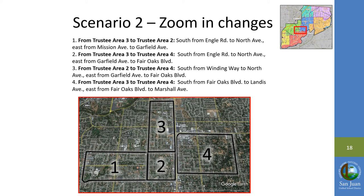The first change includes the area going south from Engel Road to North Avenue and east from Mission Avenue to Garfield Avenue. The second change includes the area going south from Engel Road to North Avenue and east from Garfield Avenue to Fair Oaks Boulevard. The third change includes the area going south from Winding Way to North Avenue and east from Garfield Avenue to Fair Oaks Boulevard. The fourth change includes the area going south from Fair Oaks Boulevard to Landis Avenue and east from Fair Oaks Boulevard to Marshall Avenue.